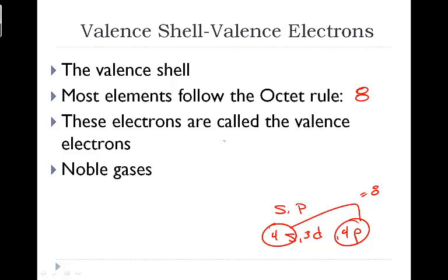And most elements are going to do that, with the exception of hydrogen, helium, lithium, beryllium, boron, for reasons we talked about earlier. These electrons in the outermost energy level are called valence electrons, and they're the basis for the atom-to-atom interactions.